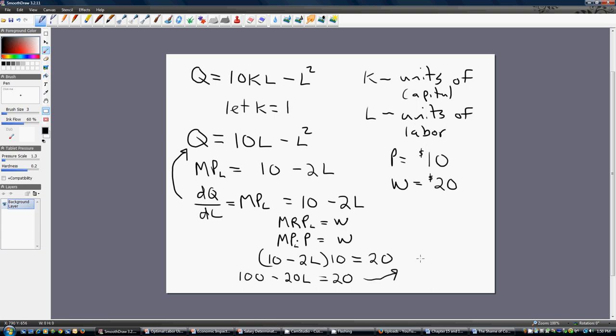Moving over here, running out of room. We're going to get 20L equals 80. Moving the 20L over to the right-hand side, and then the 20 over to the left-hand side. And so, we'll simplify this down to L equals 4.